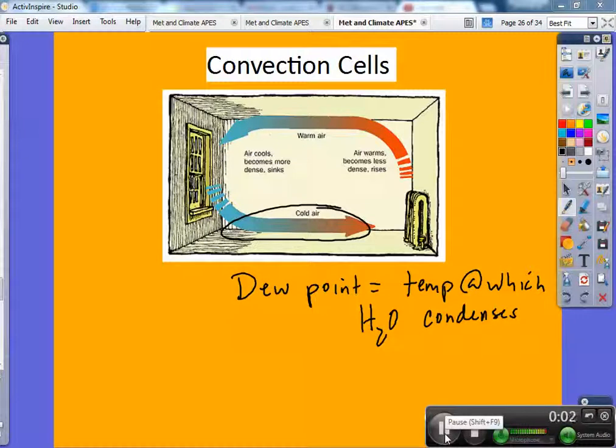Alright, so we left off talking about convection cells. As we discussed in class today, on a local level, these convection cells are responsible for land and sea breezes.